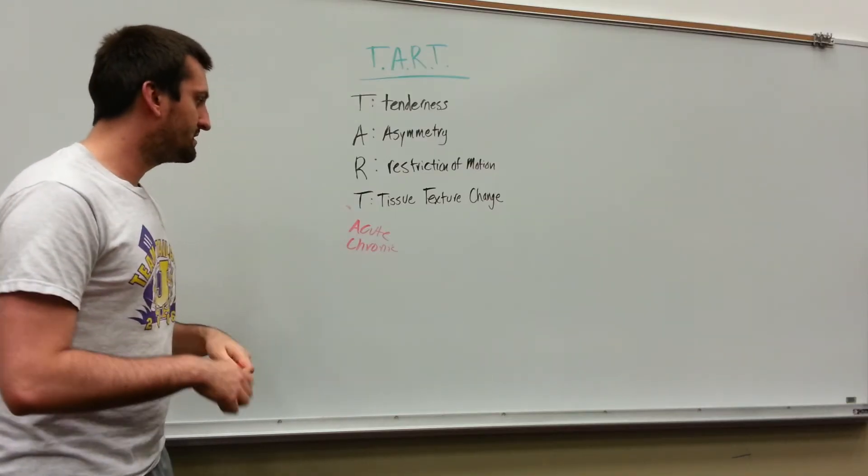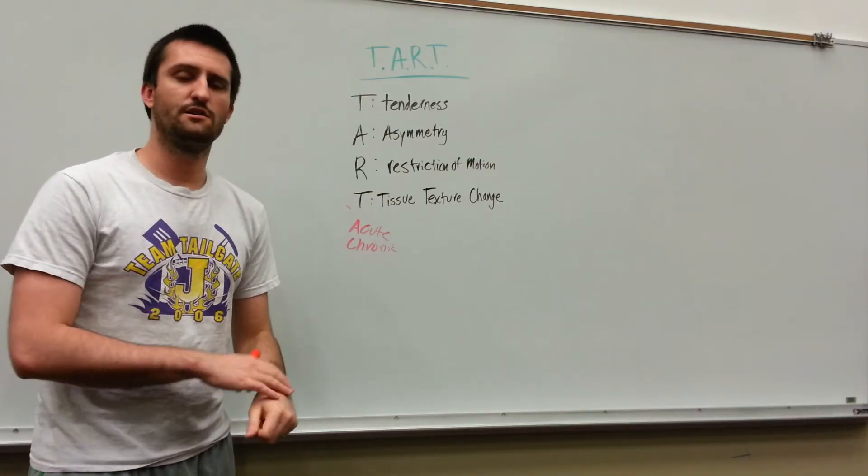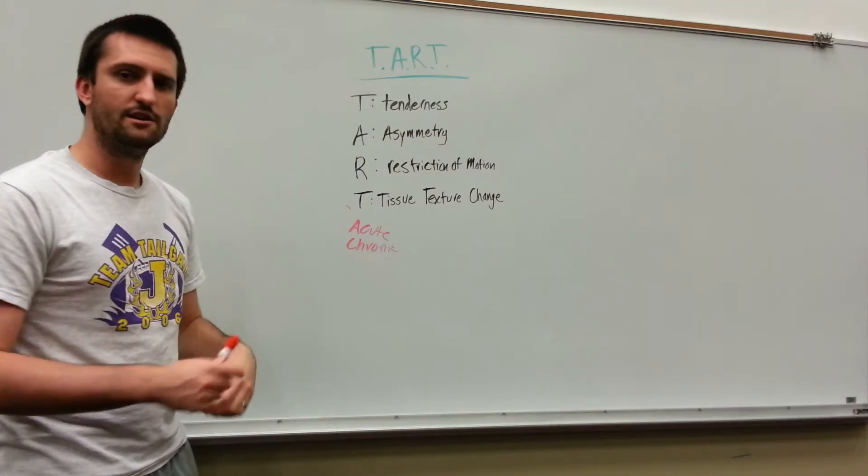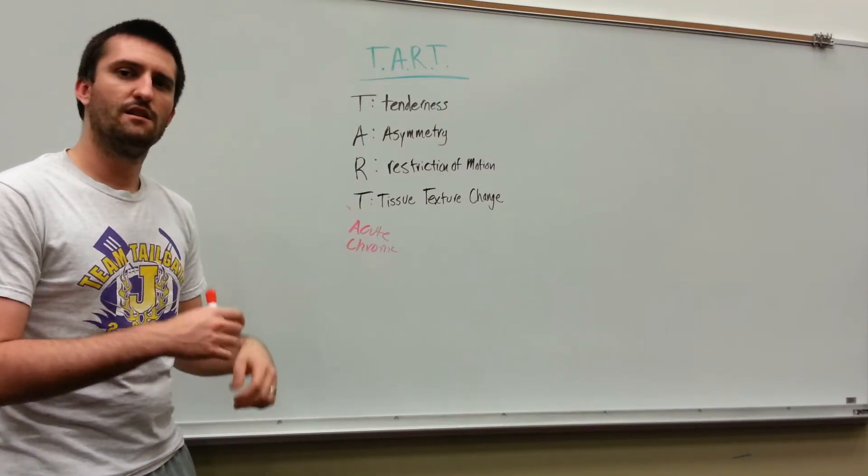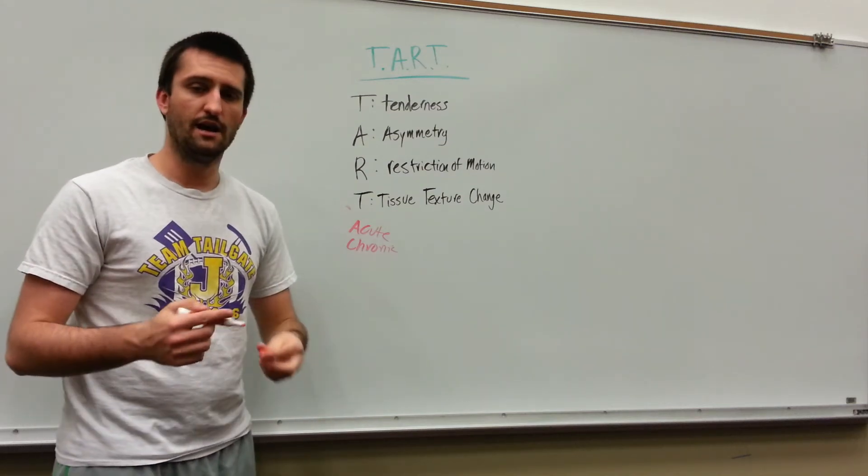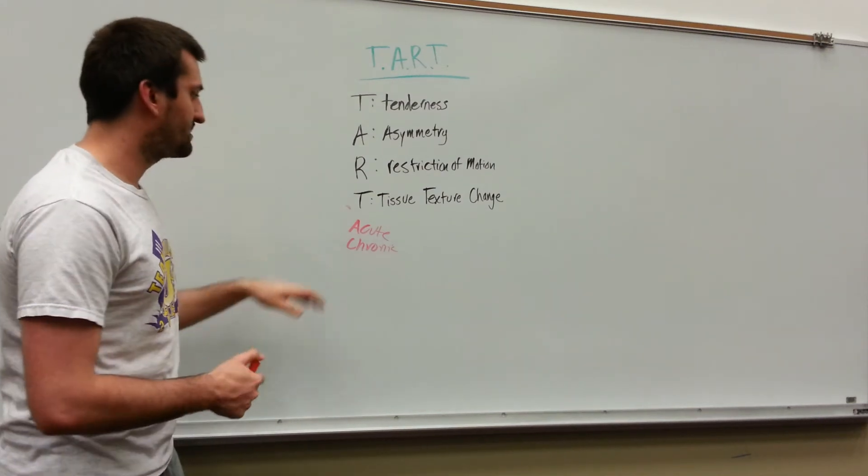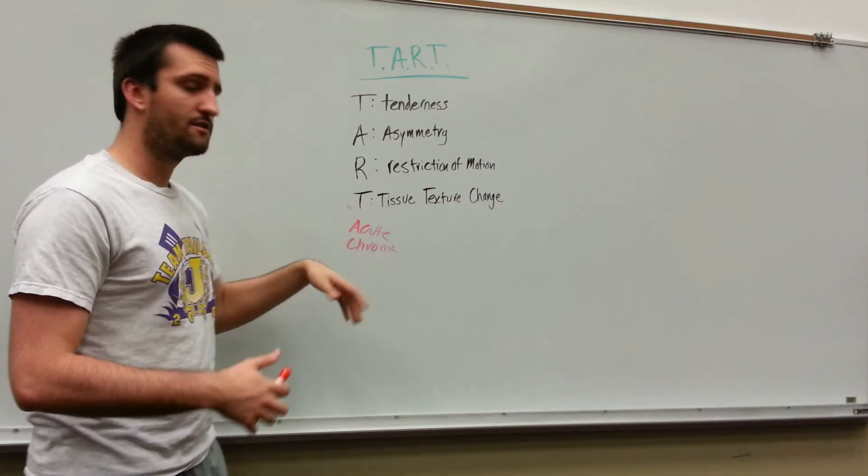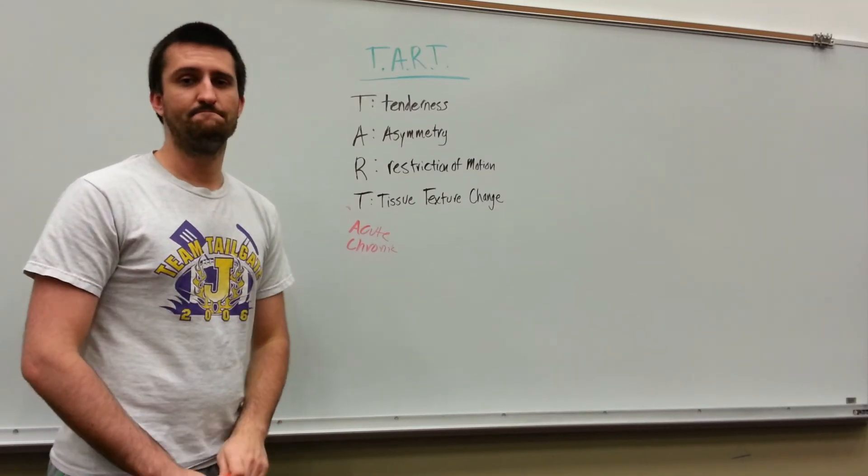In a chronic somatic dysfunction, you're going to feel cold. You're going to feel ropey, stringy. You're going to feel chronic changes. So another word for acute would be boggy, a buzzword, but really it's the chronic being the cold, the stringy, the ropey. There's going to be a lot of conditions.